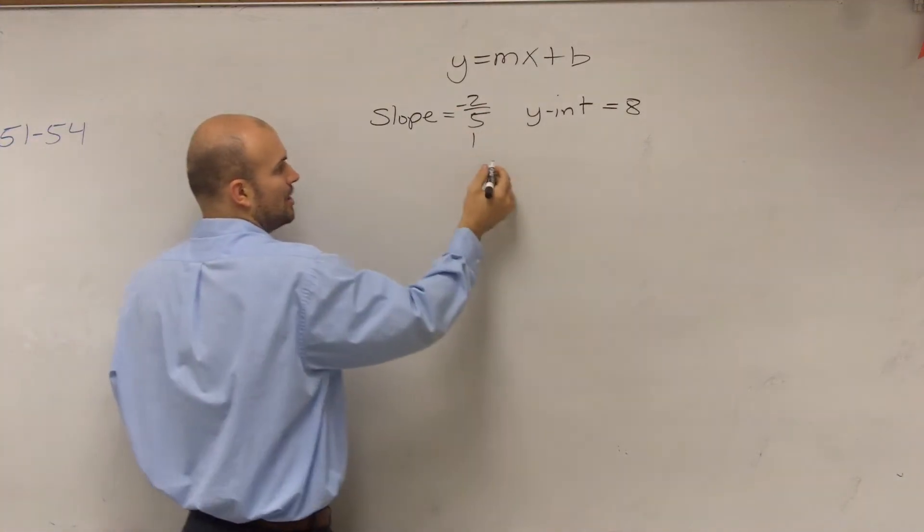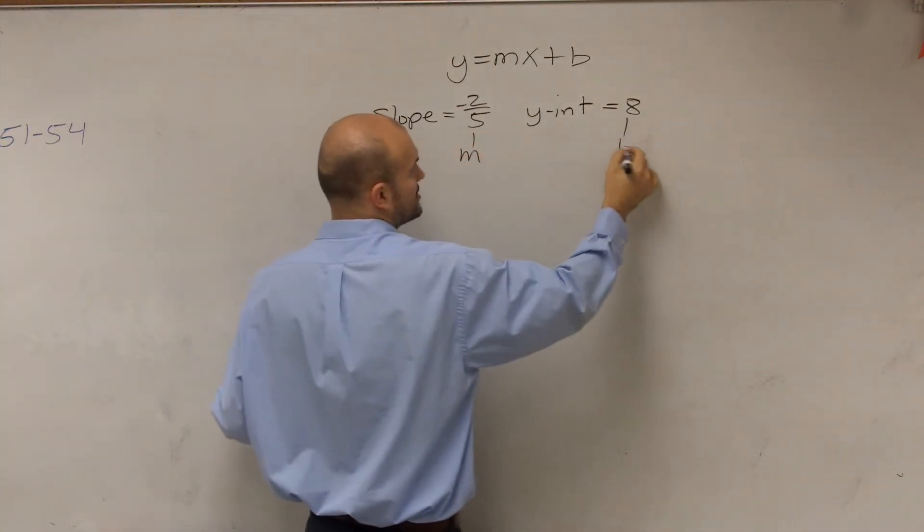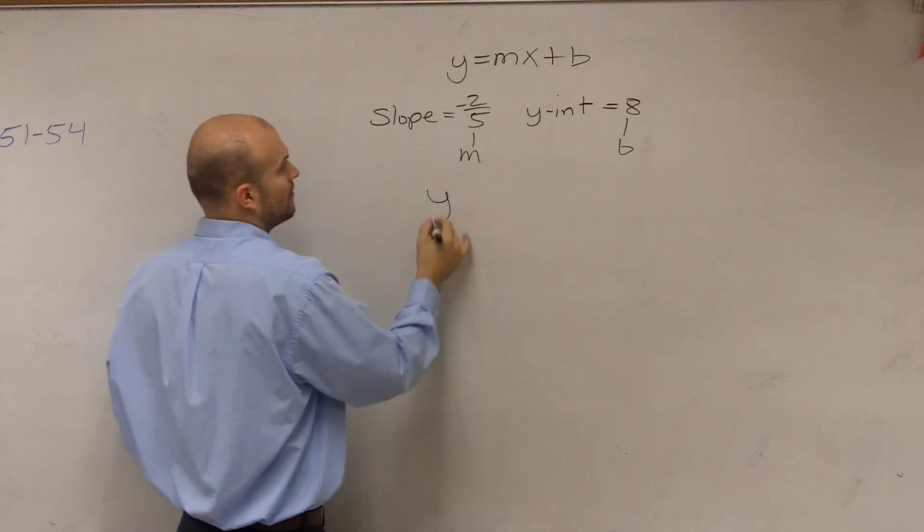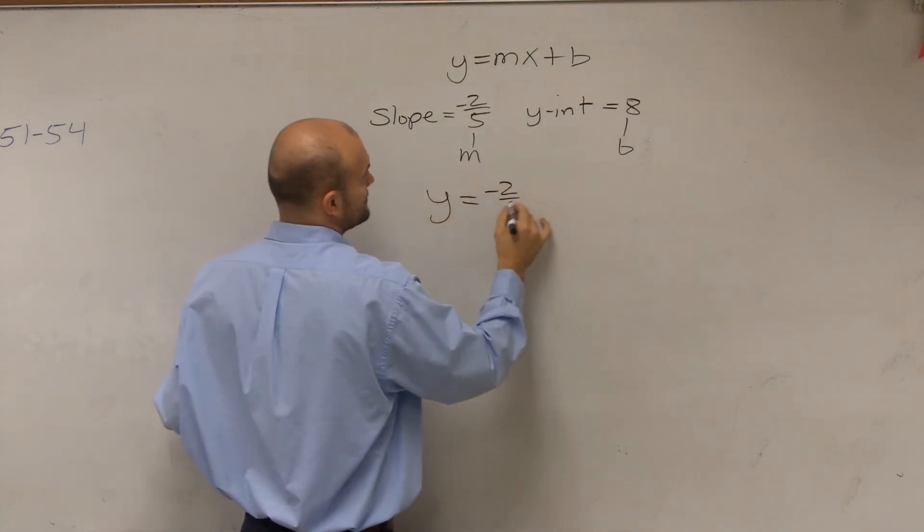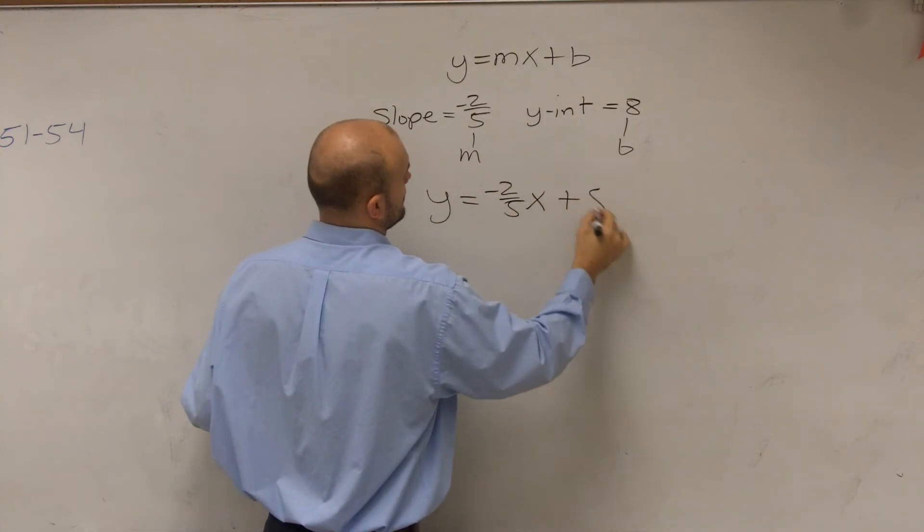So if I already know the slope, that's m, and that's your b, guess what? y equals negative 2 fifths x plus 8.